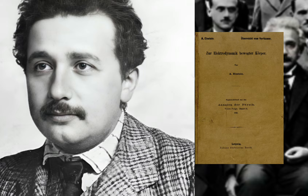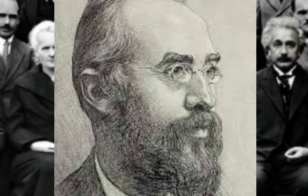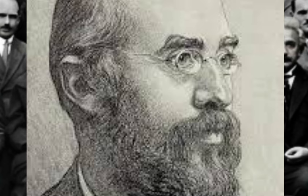By incorporating the Lorentz transformations into his theory, Einstein was able to reconcile apparent inconsistencies in the behavior of light, time, and space, ultimately leading to the groundbreaking principles of time dilation, length contraction, and the constancy of the speed of light. In essence, Lorentz's foundational work provided Einstein with the mathematical framework needed to revolutionize our understanding of the fundamental laws of the universe, making it one of the most profound collaborations in the history of theoretical physics.